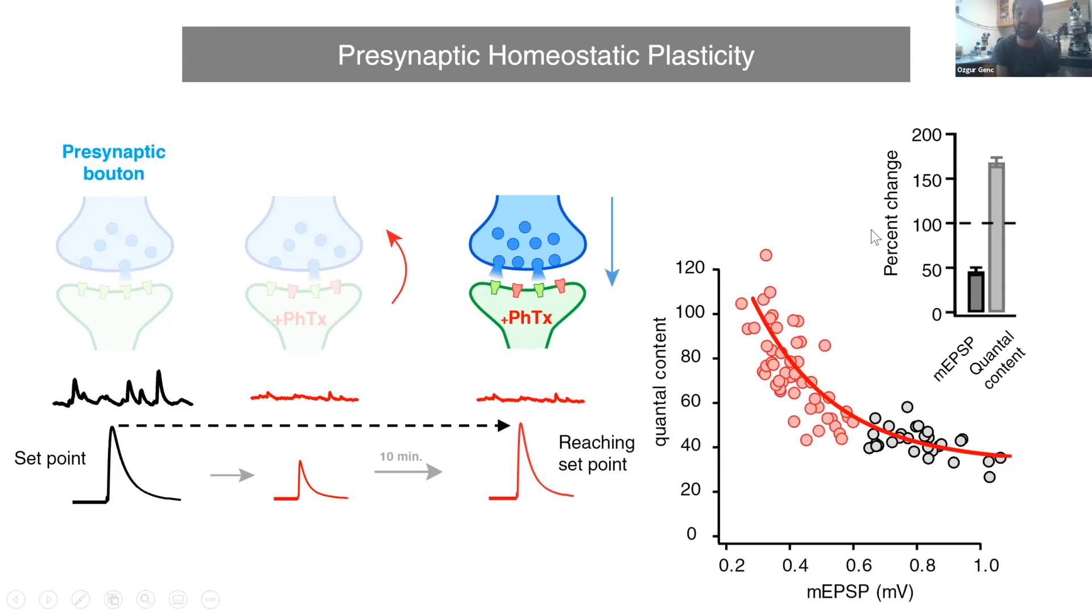As a result of a retrograde signaling, we can restore the activity levels back to the set point by increasing the neurotransmitter release. This phenomenon is called presynaptic homeostatic plasticity. We can also quantitatively plot this phenomenon. In the x-axis we are plotting the receptor function as the magnitude of miniature EPSP amplitudes. In the y-axis we are plotting the neurotransmitter release, which is basically boosted up when the receptor function is dropped. This exponential plot shows the homeostatic upregulation of the neurotransmitter release. When the receptor function is dropped, there is a concomitant increase in neurotransmitter release that basically offsets the reduction in receptor function.